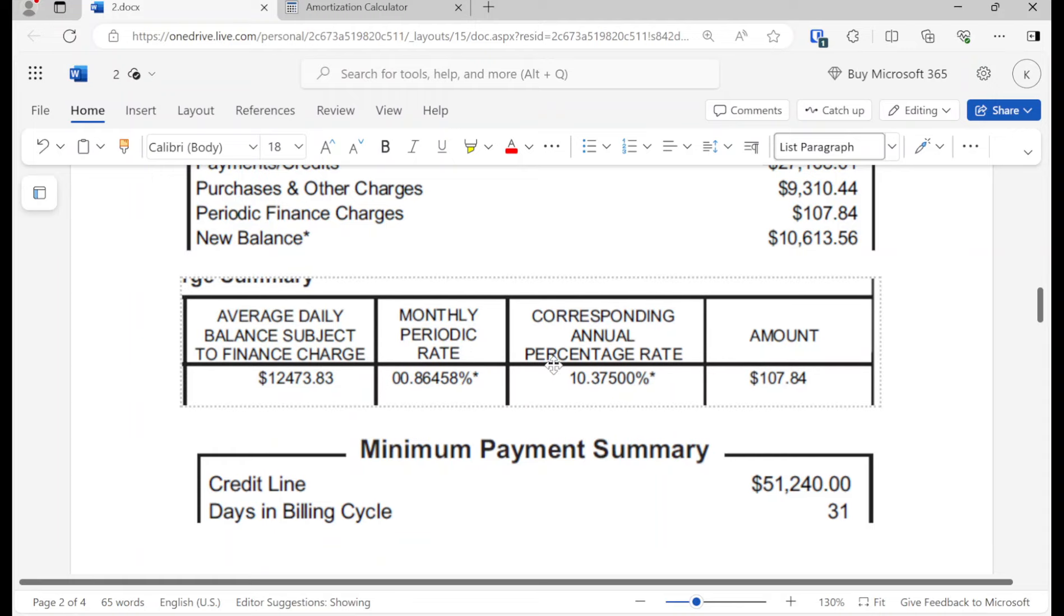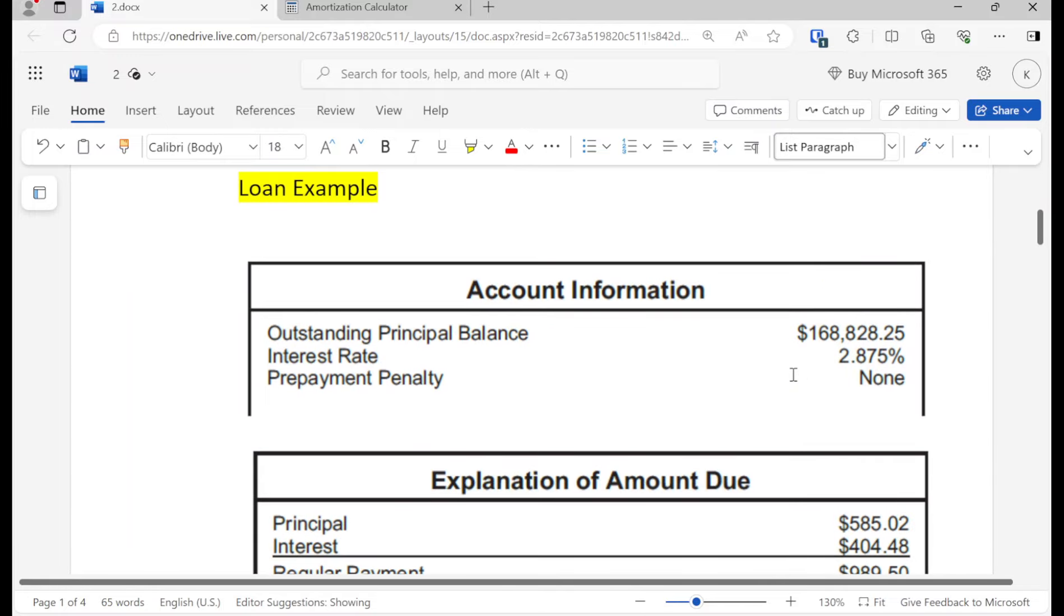Again, pretty much the exact same thing, except it's based on the number of days in the billing cycle and the average daily balance. So the way that they get the average daily balance is they add up the balance of every single day and then divide it by 31, and they multiply by the interest rate and divide by 12 to get that monthly periodic rate. And again, same exact thing.